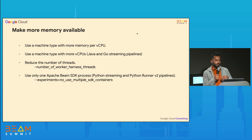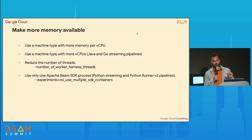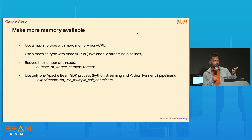Audience question: Would it make more sense to use a custom machine type with a small number of cores and a large amount of memory? Yes, you can do that, but if you're setting the single SDK process flag, those cores would not be used. What you described would essentially be the first option — a custom machine type where you select a worker with more memory capacity per vCPU.